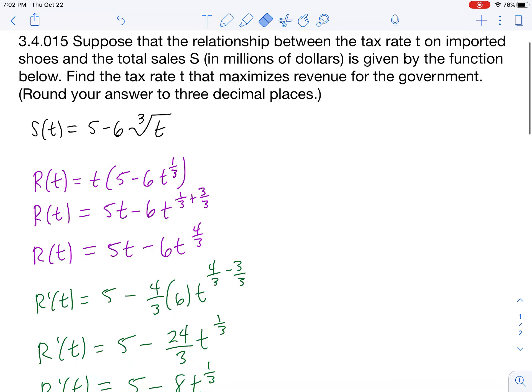If we have a function that's given to us, we're looking for the tax rate t. We have to multiply what we have right here, what we're given, by t, and this will give us revenue.